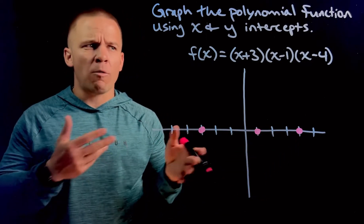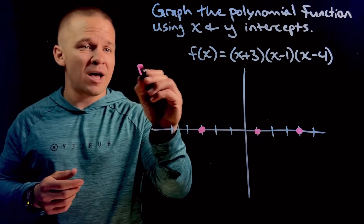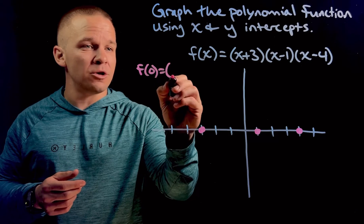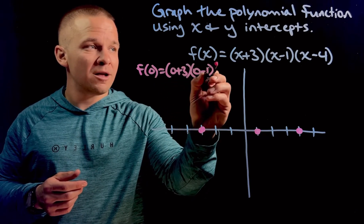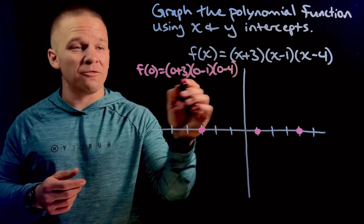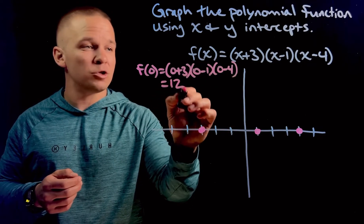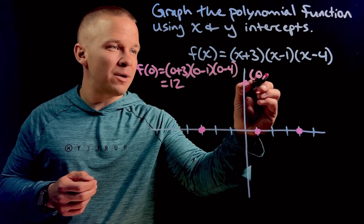What about my y-intercepts? Well, if I want my y-intercepts, I need to substitute in zero for x. So I would have f of zero is equal to zero plus three, zero minus one, and zero minus four. So I'm going to have three times negative one times negative four, that's going to give me positive twelve.